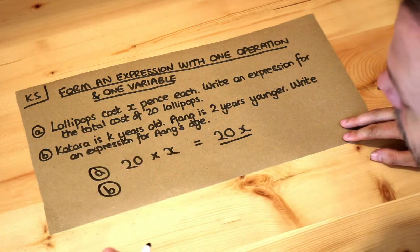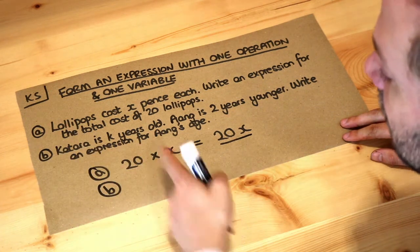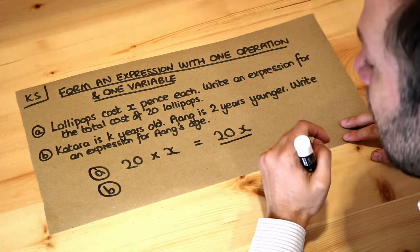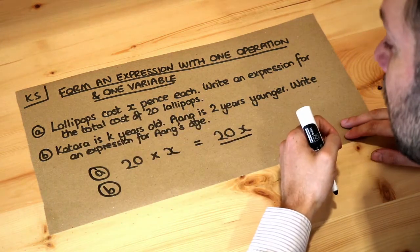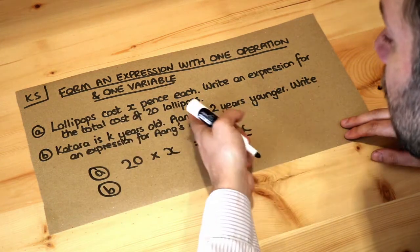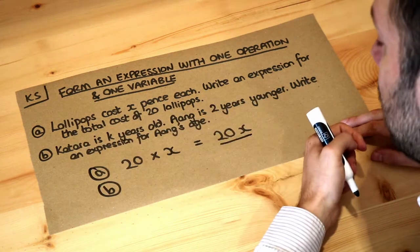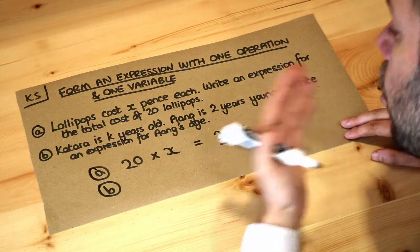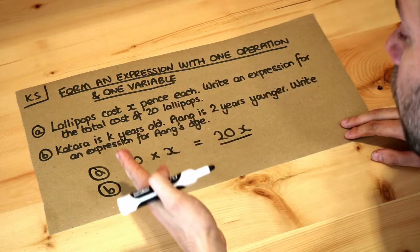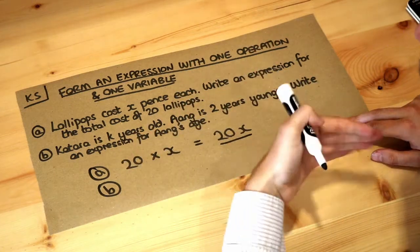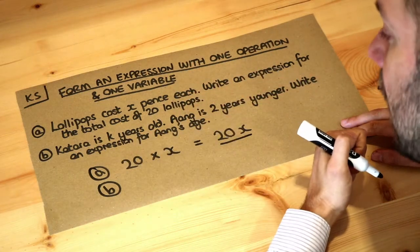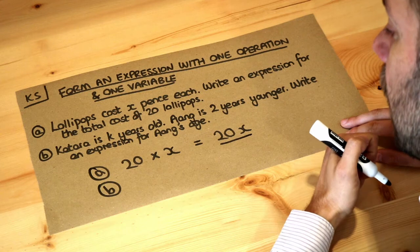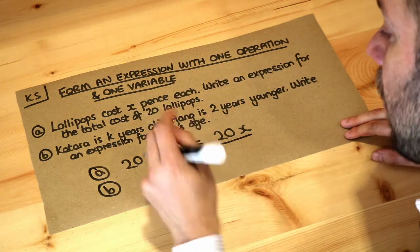If you're confused by this, let's just give Katara an age — say she's 12 years old. If Ang is two years younger, you would do 12 minus 2 to get an age of 10.